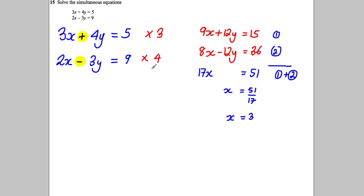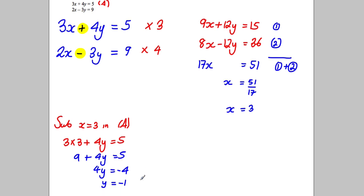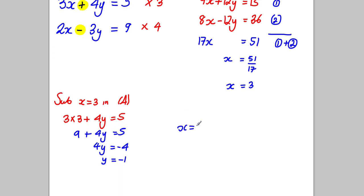So substitute x = 3 into let's say equation A. So we get 3 × 3 + 4y = 5. So we've got 9 + 4y = 5. Subtract 9 from both sides: 4y = -4, and divide by 4: y = -1. So we are thinking that our answer is x = 3 and y = -1.